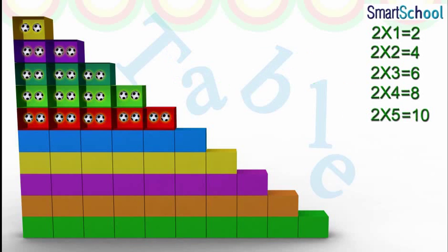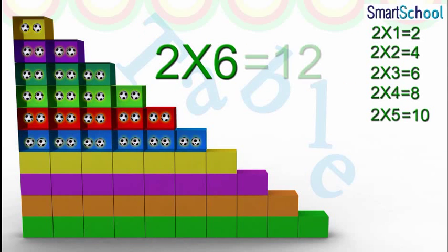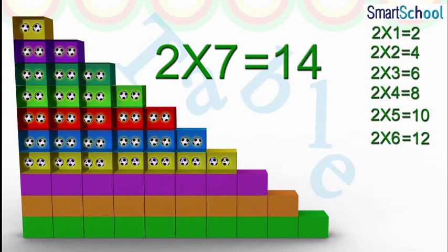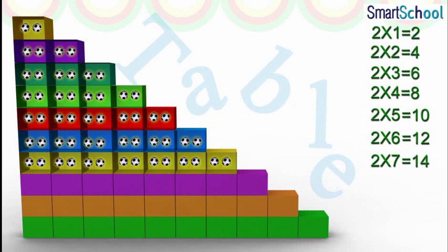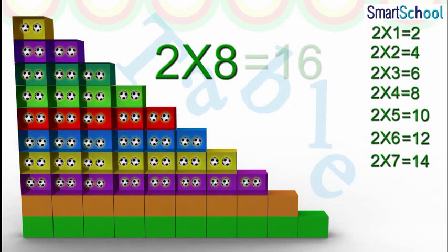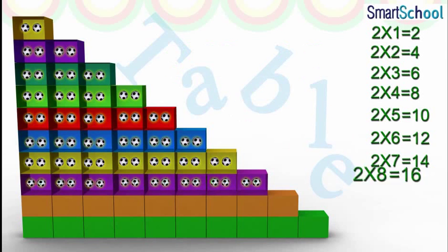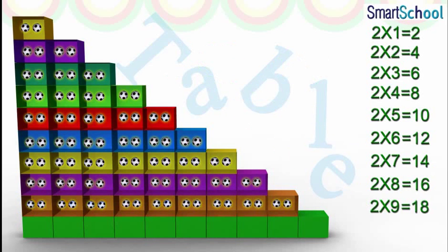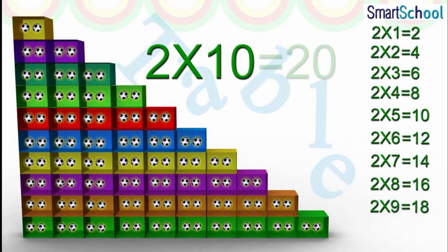Two into six is twelve. Two into seven is fourteen. Two into eight is sixteen. Two into nine is eighteen. Two into ten is twenty.